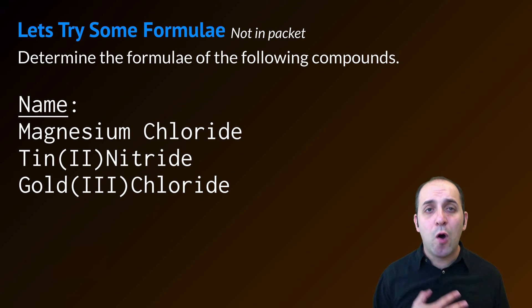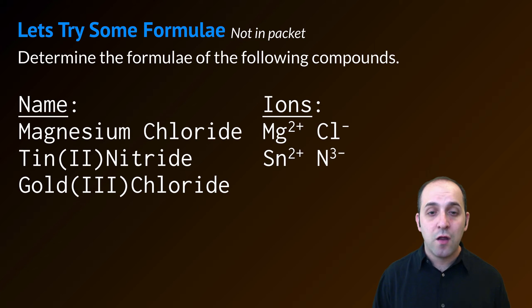The first thing I'm always going to do when I try to figure out a formula is I'm going to figure out what the ions are that I'm using. In magnesium chloride, magnesium is a 2+ ion and chloride is a minus ion. In tin 2 nitride, tin 2 is a 2+ ion and nitrogen is a 3- ion. And finally in gold 3 chloride, gold 3 is a 3+ ion and chloride is a minus ion. Now that I know those, I can put them all together and figure out what the formulas are going to be.